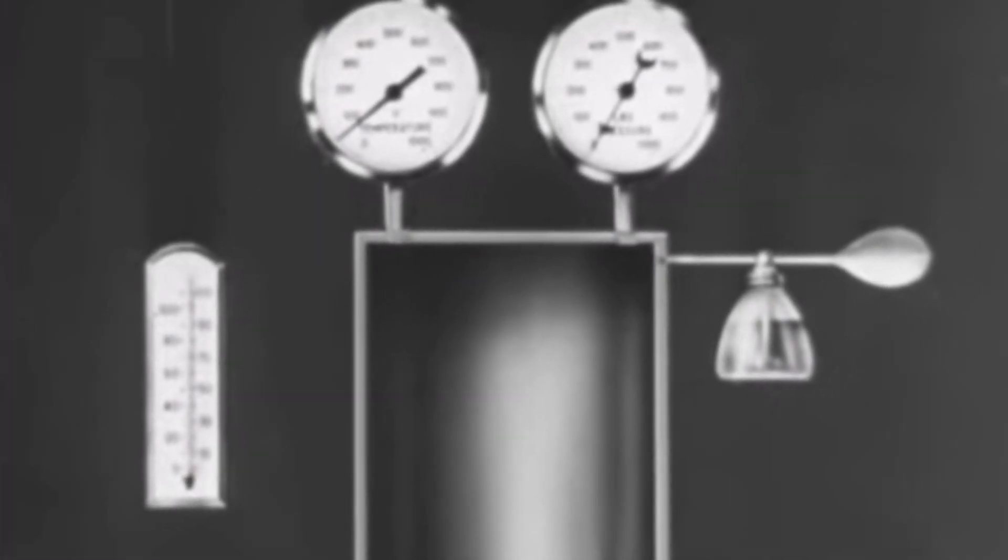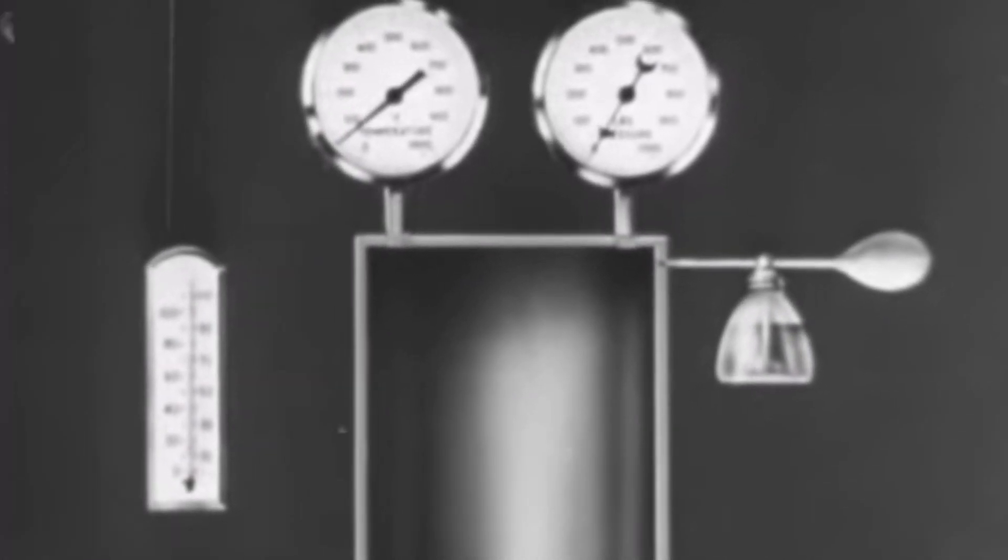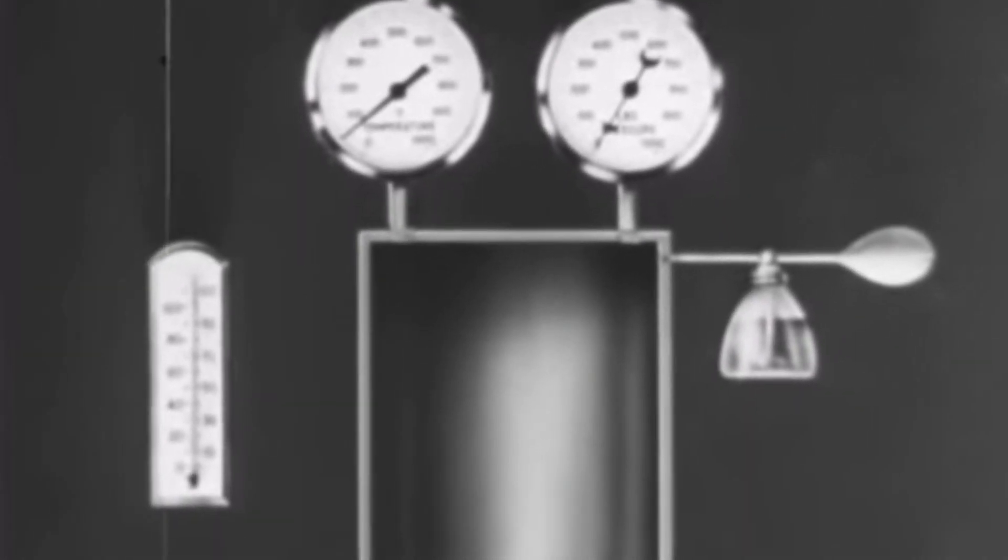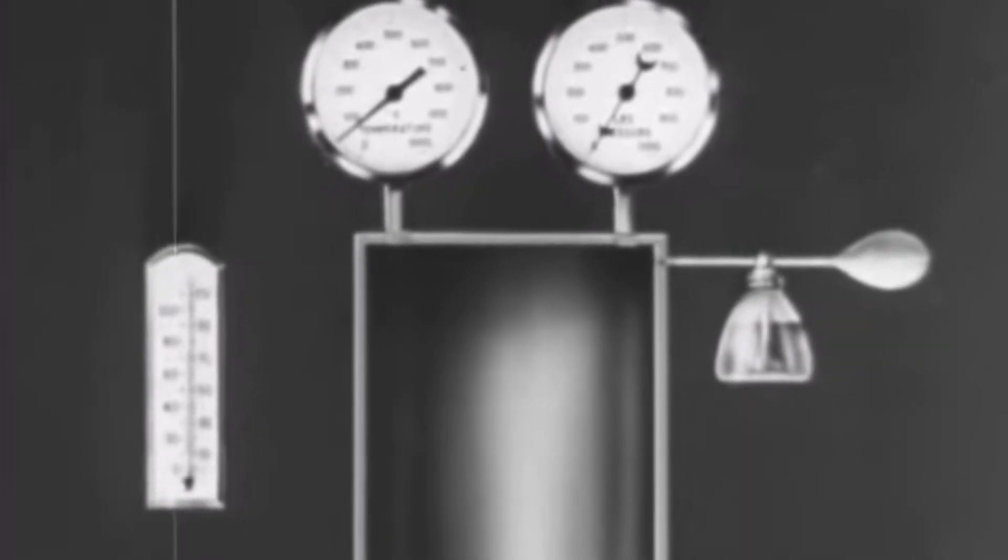Now let's convert this apparatus into a mechanism which will apply these principles of compression ignition and expansion to provide usable power. First, we take away the pressure gauge and the thermometers and strengthen the walls of the cylinder to withstand continued high temperatures and pressures.